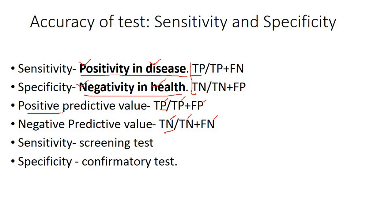All P's mean positive predictive value; all N's mean negative predictive value. For sensitivity and specificity, you reverse the numerator and also include the numerator in the denominator. That is the key relationship between sensitivity, specificity, positive predictive value, and negative predictive value.